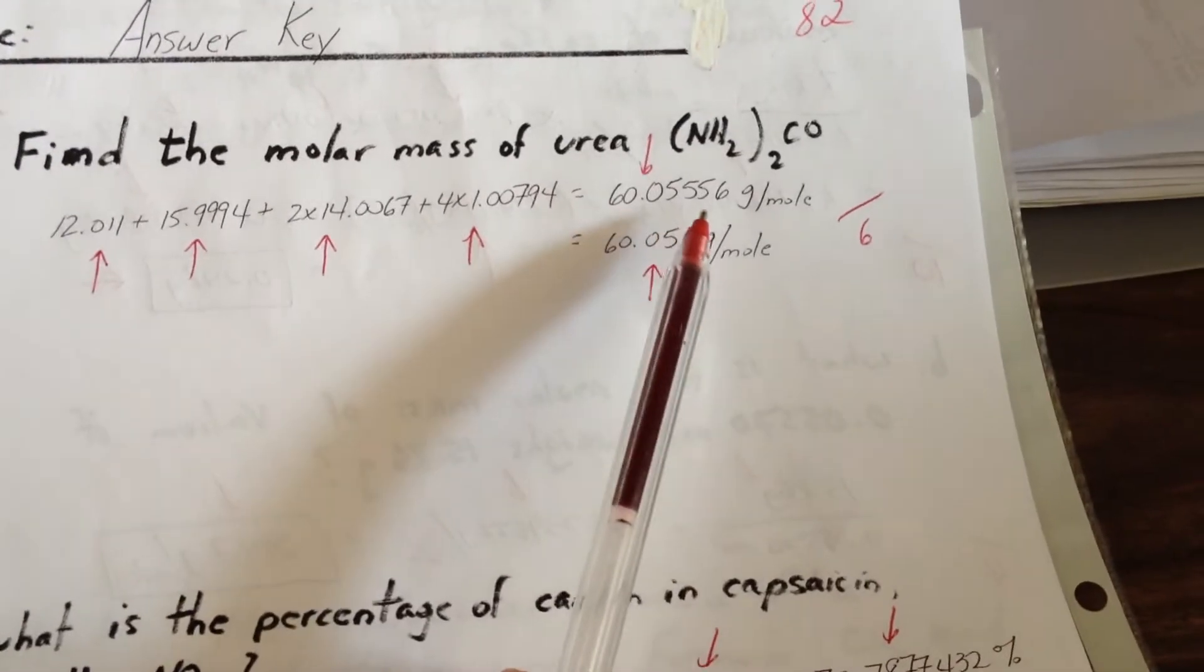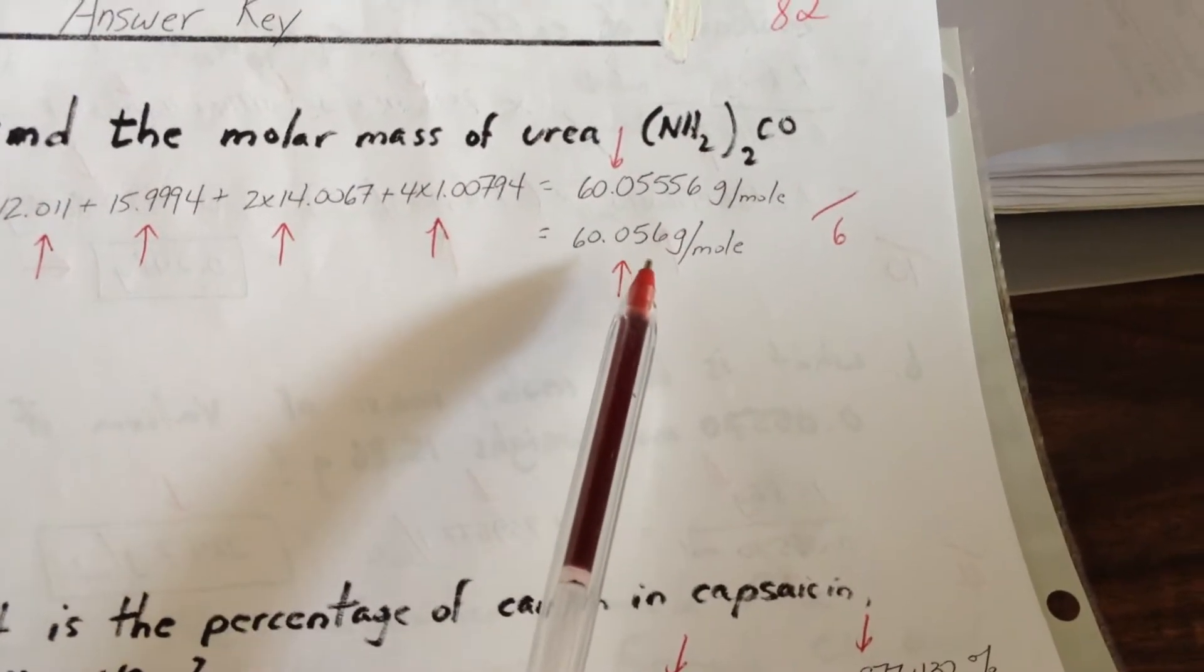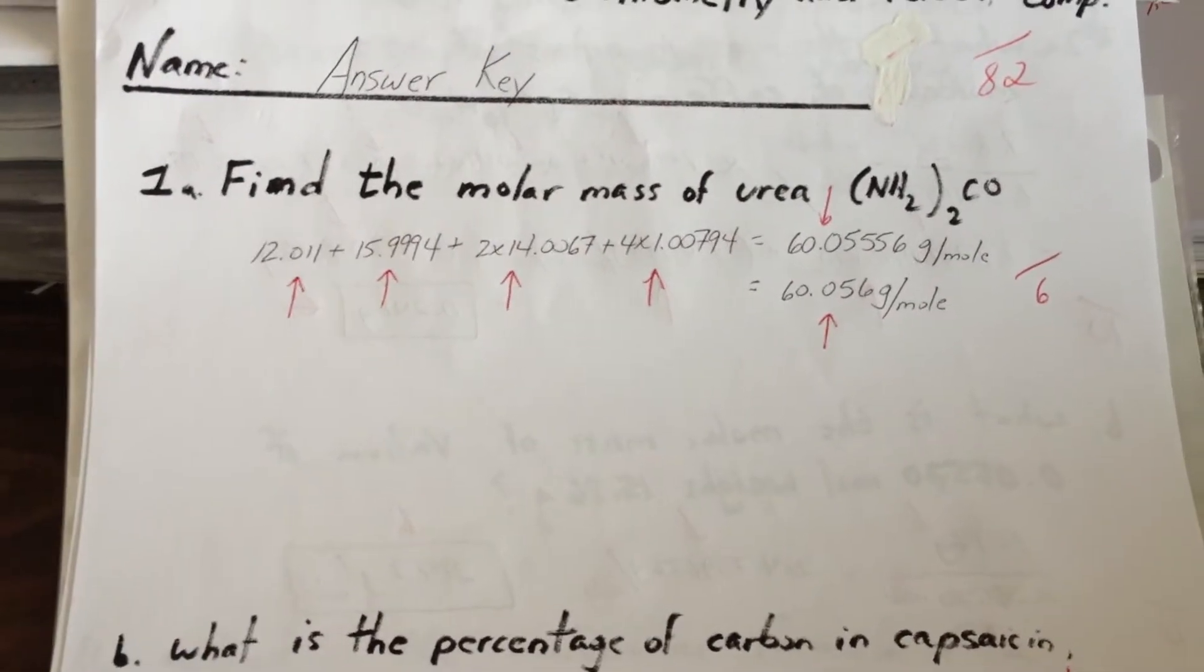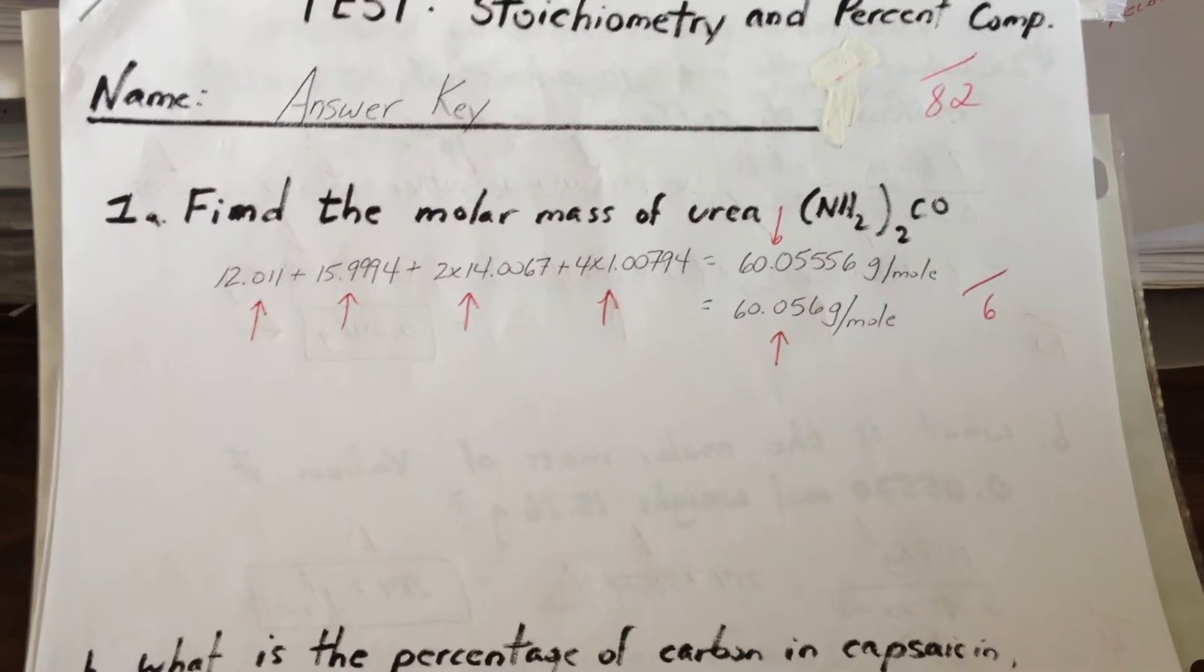Total is 60.05565 and we are only allowed five significant figures because carbon only has five significant figures in its answer. So the final answer is 60.056 grams per mole. That question is worth six marks.